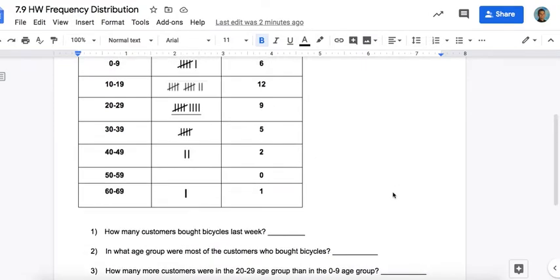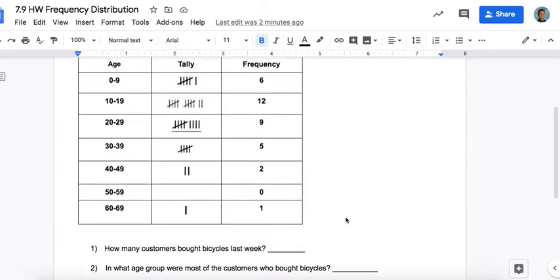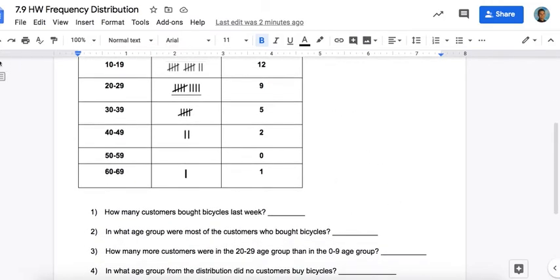Okay, so question one: how many customers bought bicycles last week? You add up all the frequencies and you should have gotten 35.